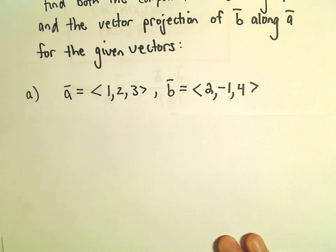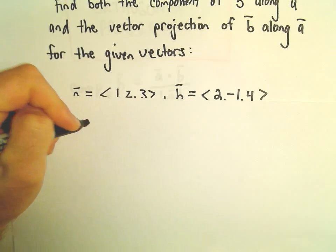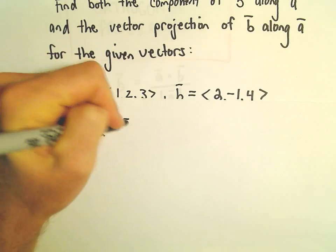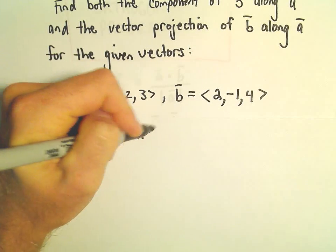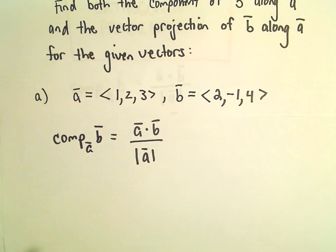Alright, so to do the component, to figure out the component of vector B along A, we take the dot product A dot B, and then we divide that by the magnitude of vector A.